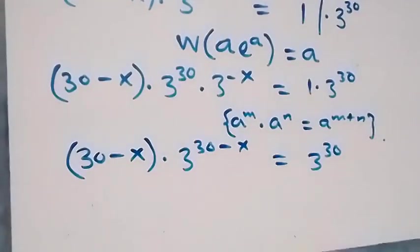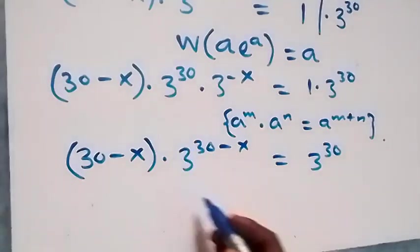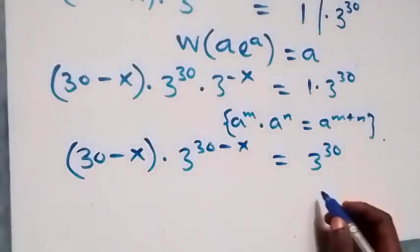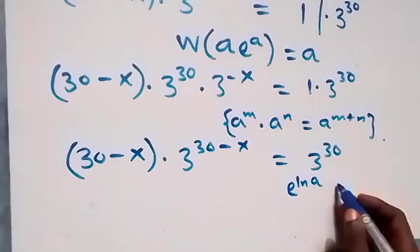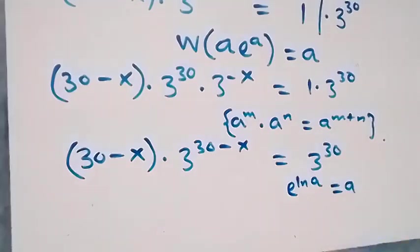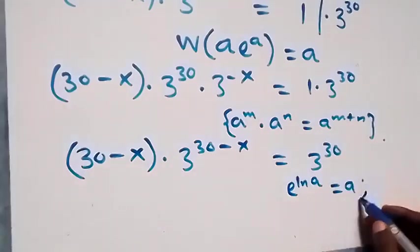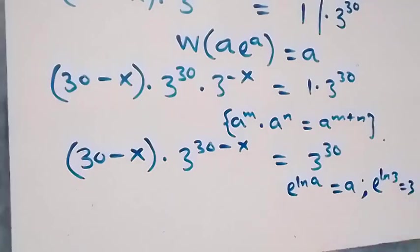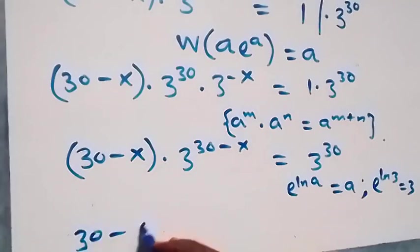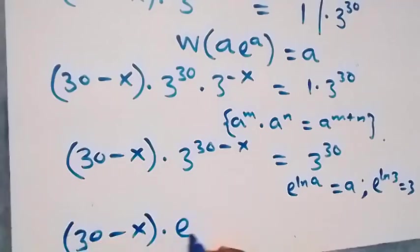Here we can replace 3 as e raised to power ln 3, since e^(ln 3) equals 3. So we have 30 minus x multiplied by e^(ln 3) raised appropriately, giving 30 minus x multiplied by e^((30−x)·ln 3).